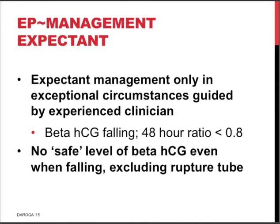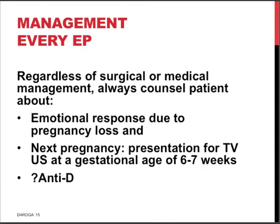Also important: there is no safe level of beta-HCG where you can exclude rupture — that is the experience from daily practice. For every ectopic pregnancy, as for every miscarriage, counsel the patient about the emotional response to pregnancy loss. Explain that for the next pregnancy she should usually wait a few months, but ultimately it is her call. At the next pregnancy she should present early for a transvaginal ultrasound scan at roughly 6–7 weeks to hopefully confirm a viable intrauterine pregnancy. If she is rhesus negative, anti-D needs to be administered.